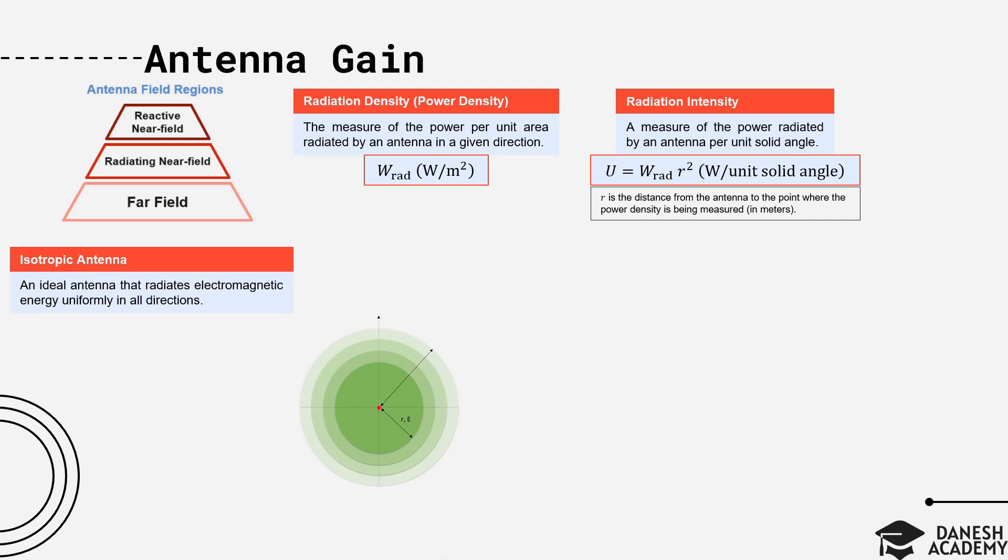Now, let's define an isotropic antenna, which is an ideal antenna that radiates electromagnetic energy uniformly in all directions. To measure radiation intensity of an isotropic antenna, shown by U0, we need its power density. Since the power is radiated uniformly in all directions, the power density at radius R is radiated power divided by the area of a sphere with radius R. We then multiply this by R squared to find the radiation intensity, which becomes radiated power over 4 pi.